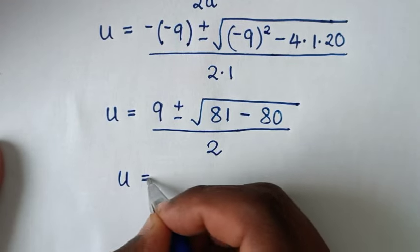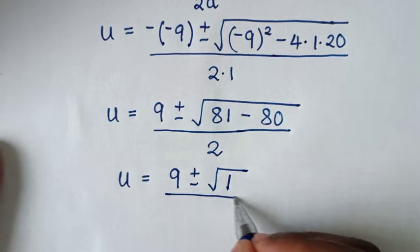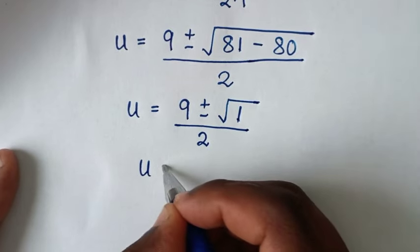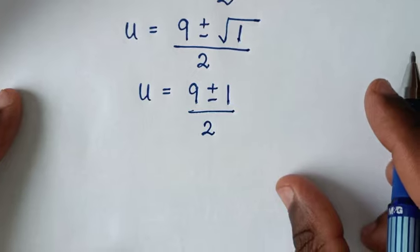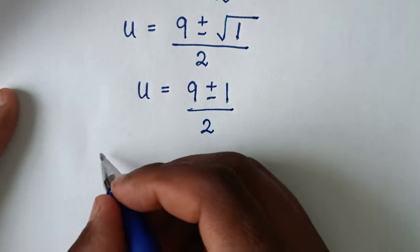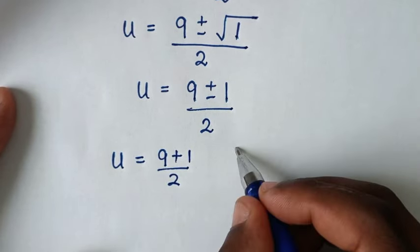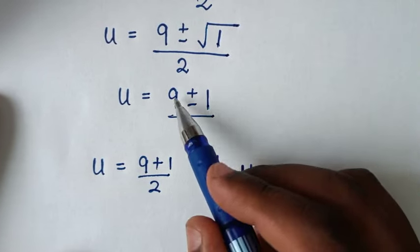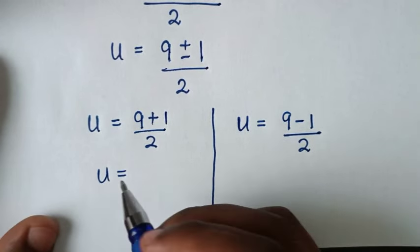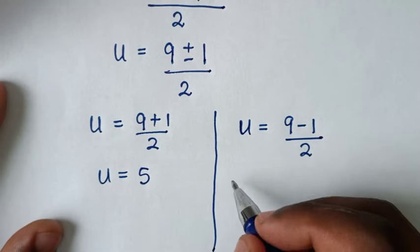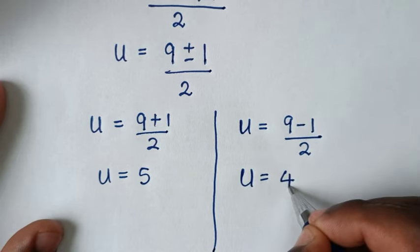Then it will be u = (9 ± √1) / 2, which is u = (9 ± 1) / 2. This gives two solutions: first, u = (9 + 1) / 2 = 10 / 2 = 5, and second, u = (9 − 1) / 2 = 8 / 2 = 4.